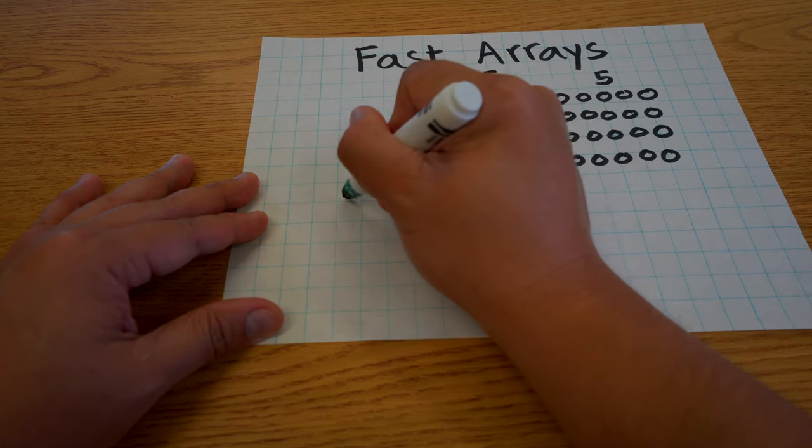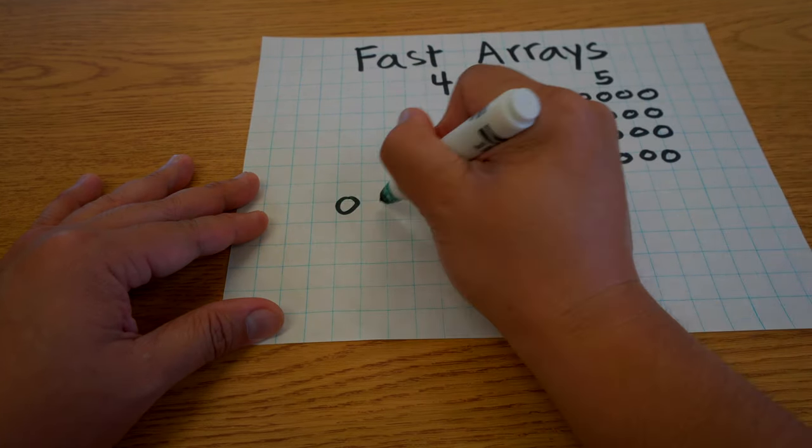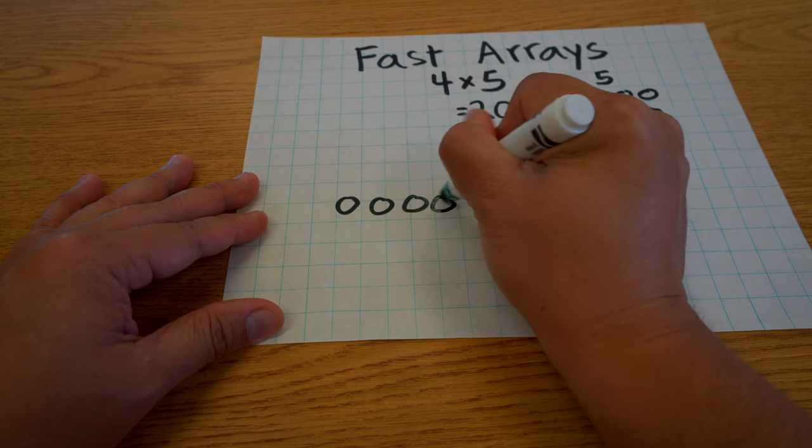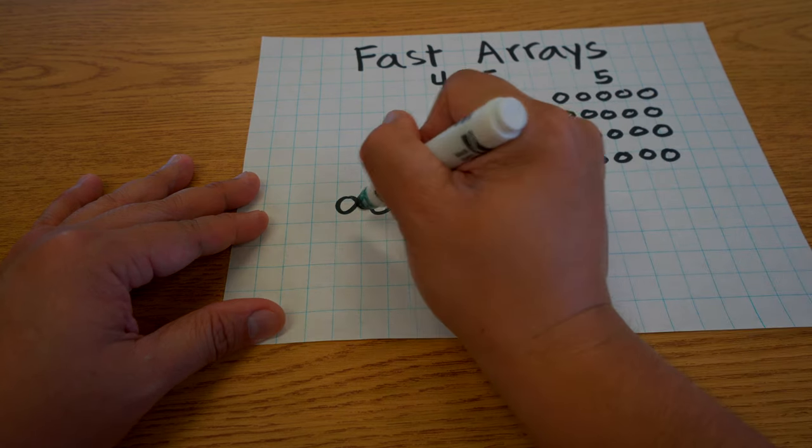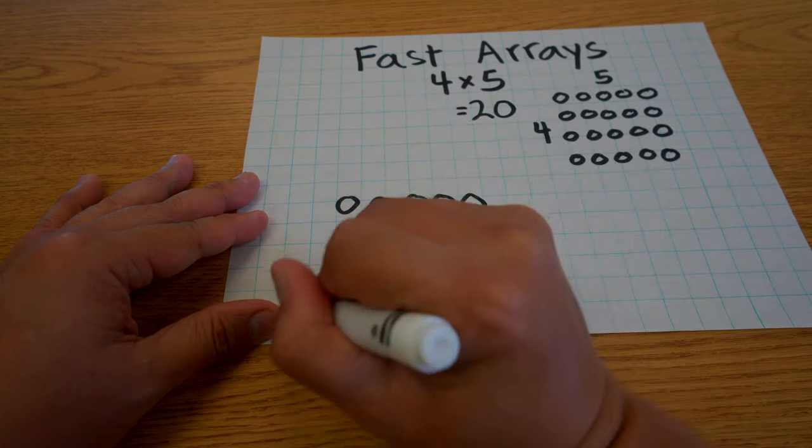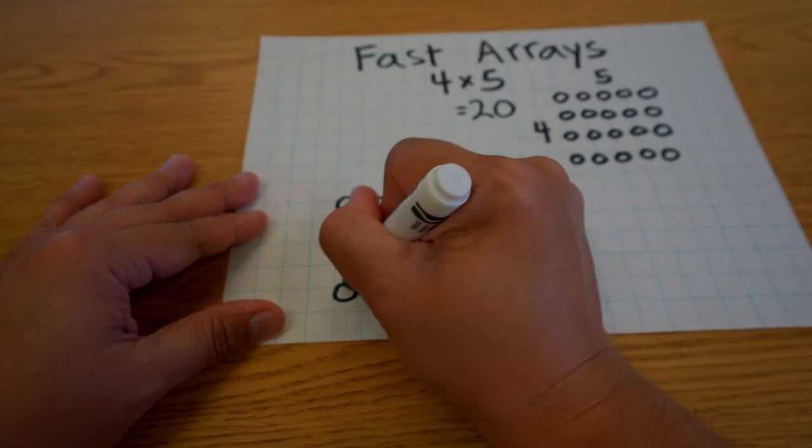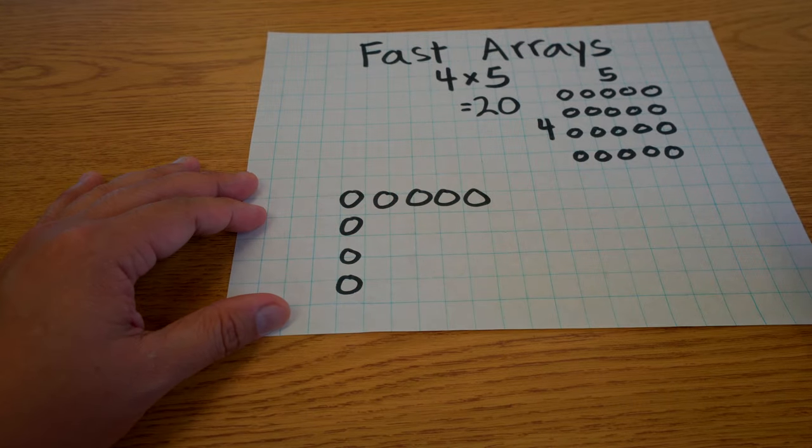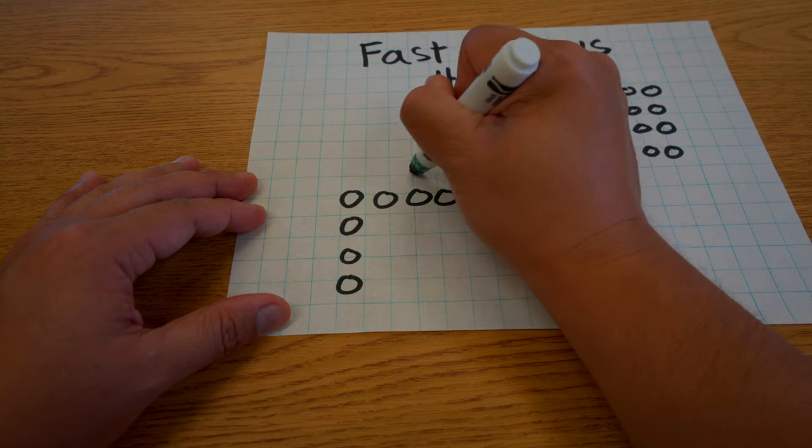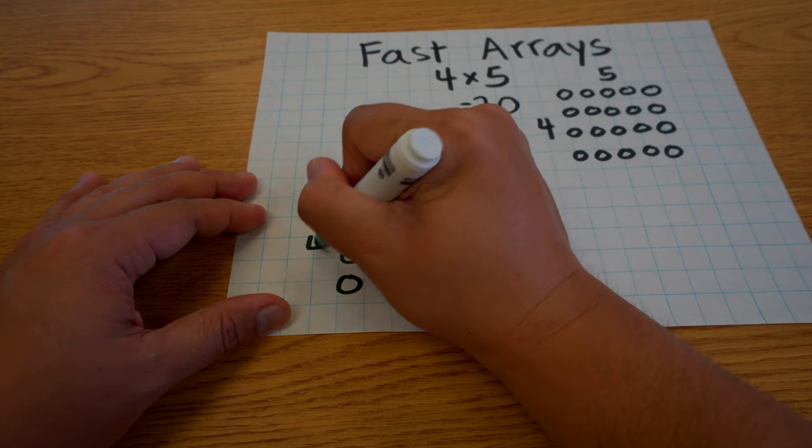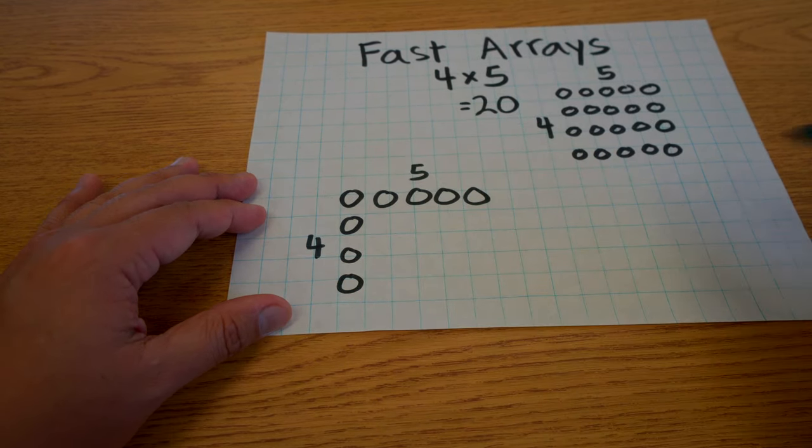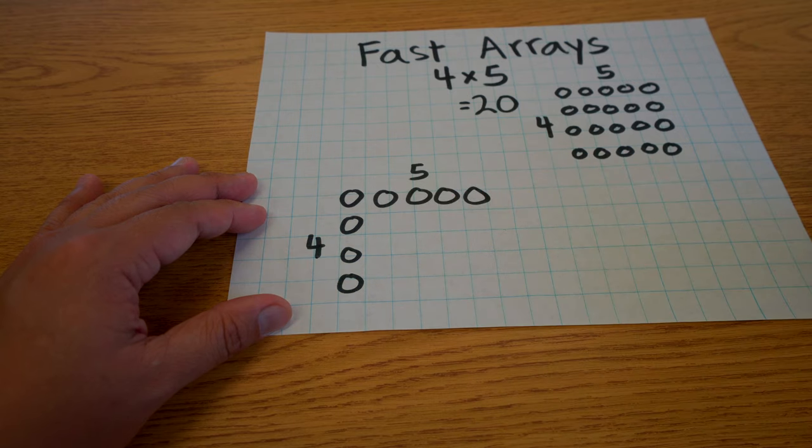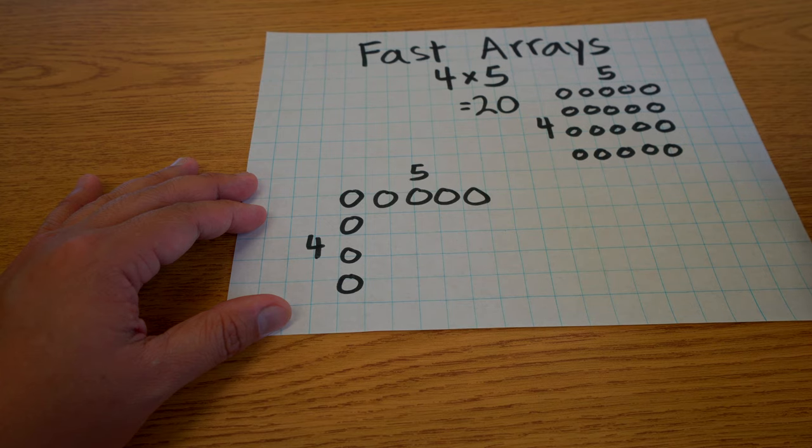So if I want to do a four by five fast array, all I need to include are two sides of the array like this. I would put five up here when I label my numbers and a four down here. And I don't have to fill in any of the other circles, as this is just a shortcut for a full array.